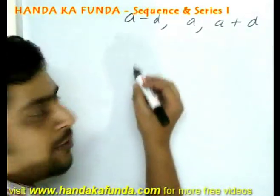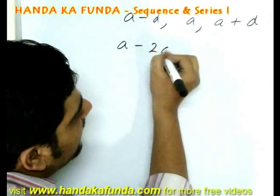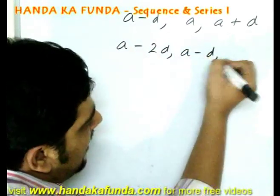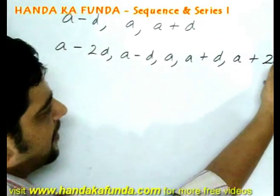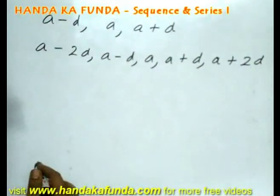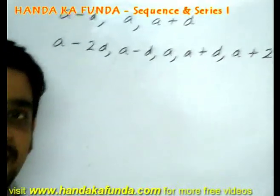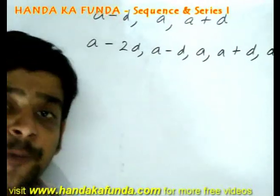If I am supposed to assume five terms, I will do a minus 2d, a minus d, a, a plus d, and a plus 2d. If I am asked to assume seven terms, it will start from a minus 3d to a plus 3d. I hope you get the drift.